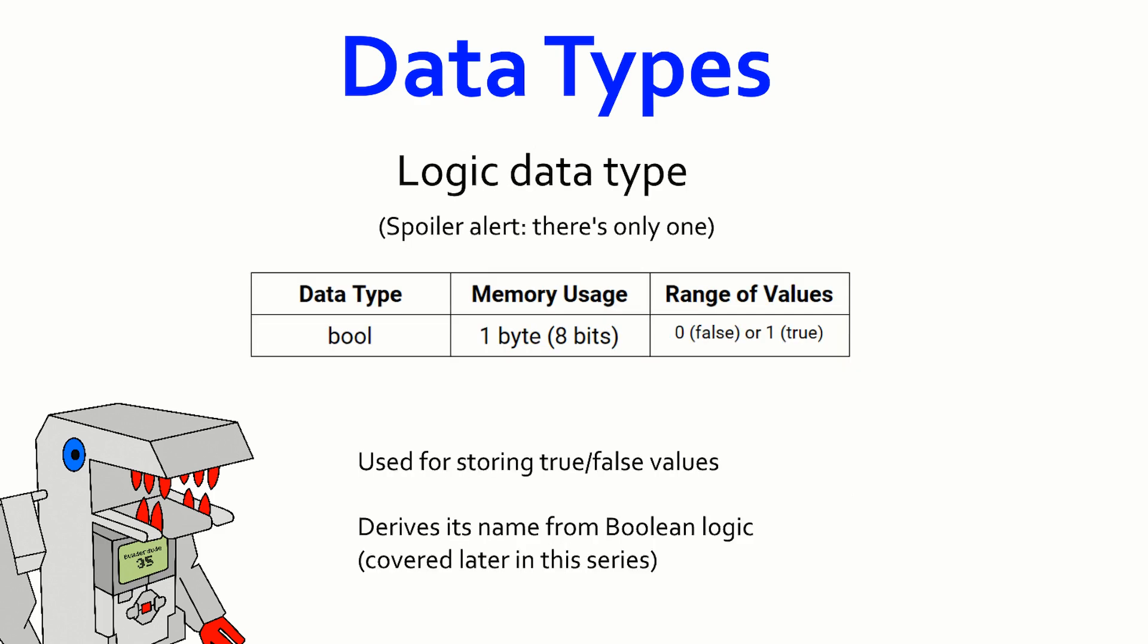Last but certainly not least, we have the logic data type, and there's only one of them. It's called the bool. It uses one byte of memory, and its range of values is from zero, which represents a false value, or one, which represents a true value. This is how computers do logic operations, such as boolean logic, which is where it gets its name from. And boolean logic is something that I'll cover a little bit later in the series. The use of true false values is important for control structures, which is also something that I'll be covering later in the series.